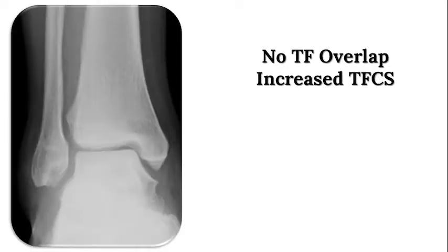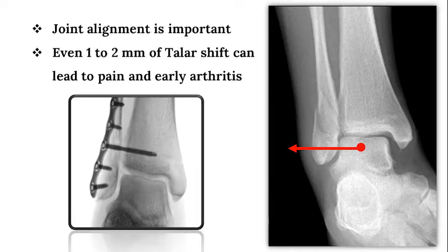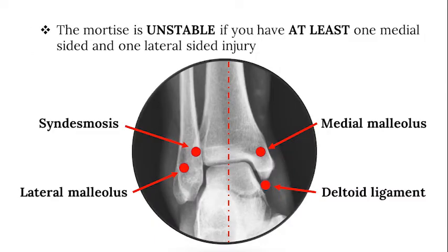This radiograph demonstrates a lack of tibiofibular overlap and a significant increase in tibiofibular clear space, which is consistent with a syndesmotic injury. Malalignment of the ankle joint predisposes to pain and arthritis. Even one to two millimeters of abnormal talar shift significantly changes the contact pressures and areas on the joint, leading to early arthritis. Deciding which treatment is best for the patient is dependent on an understanding of stability of the ankle joint.